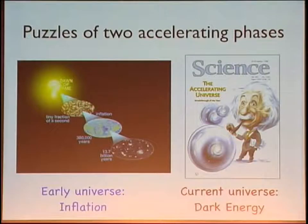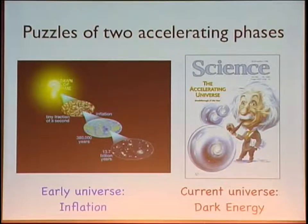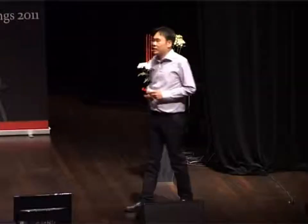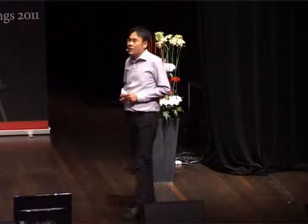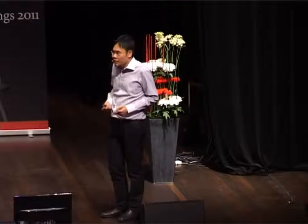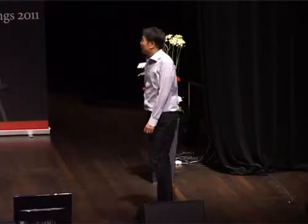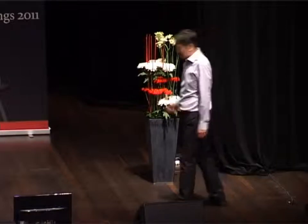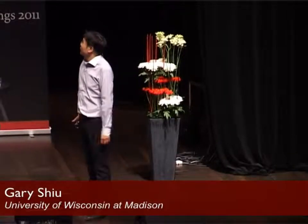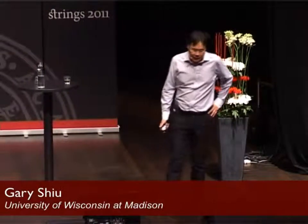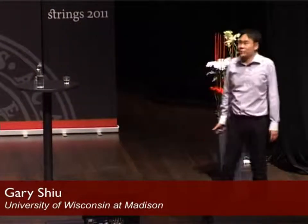What motivated our work is to a large extent the observational evidence for an accelerating universe. In addition to inflation, which has gained increasing experimental support, results from observational cosmology including the supernova and the CMB strongly suggest that our current universe is also accelerating. This observation has triggered more than a decade of studies of the de Sitter vacuum in string theory, and for good or bad led to the picture of a string theory landscape.